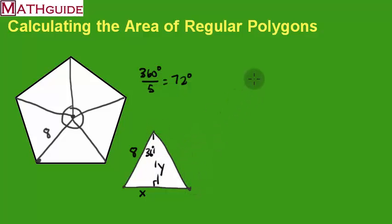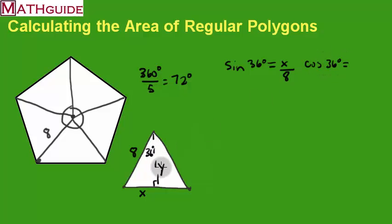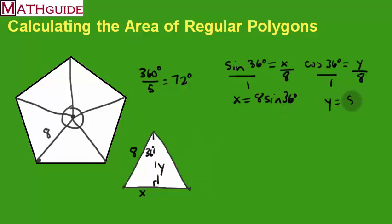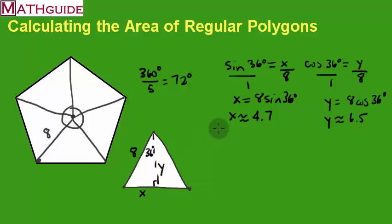To calculate the dimensions, I'll use trigonometry. The sine of 36 degrees equals opposite x over hypotenuse 8, and the cosine of 36 degrees equals adjacent y over hypotenuse 8. Cross-multiplying gives x = 8 sine 36 ≈ 4.7, and y = 8 cosine 36 ≈ 6.5.